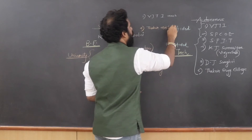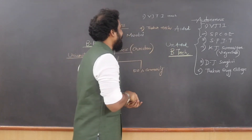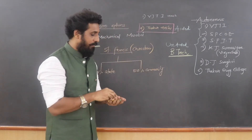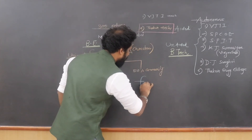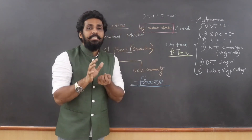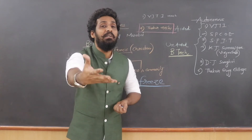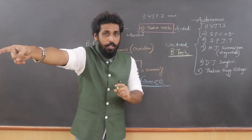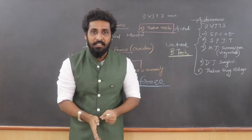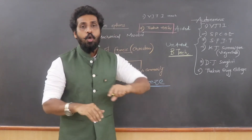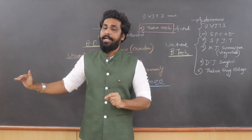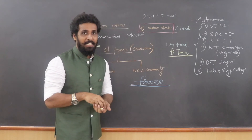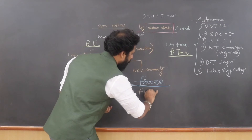Suppose your ninth option — say Thakur College Mechanical — is allotted to you. At this point, three options are available: Freeze, Float, or Slide. Freeze means you are happy with the allotted seat and don't want to participate in CAP Round 2. You accept the seat, go to the college, and secure admission. Many students choose not to freeze and instead opt for the second choice: Float.